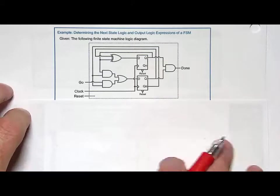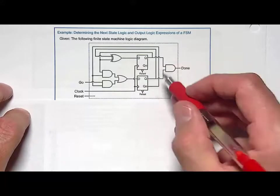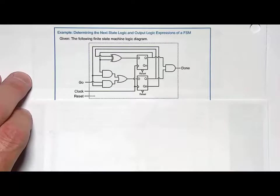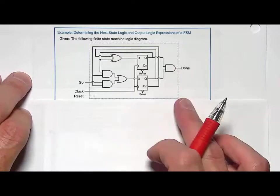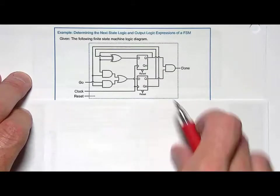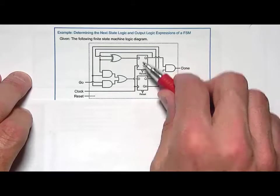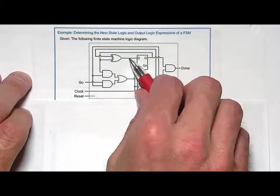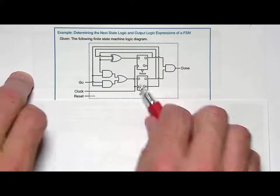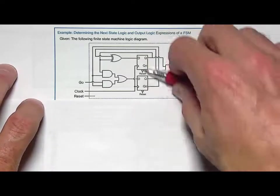The first thing we want to do is come up with the expressions for the next state logic and the output logic. And then we can use those to reconstruct the state transition table. To do that, you have to first assign names to these things. Using the common naming convention, I'm going to call one of them q1cur and q0cur. And then that would mean that the input to the D flip-flop would be q1next and q0next. It doesn't even matter which one you assign because you're choosing these names yourself.